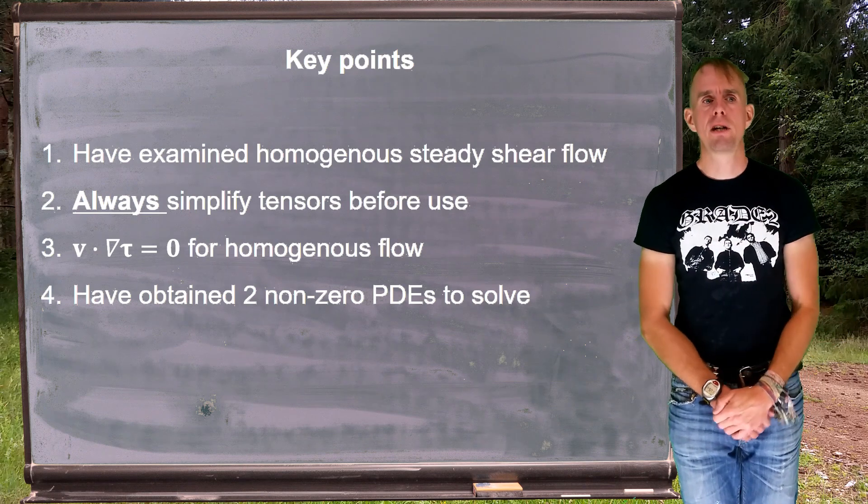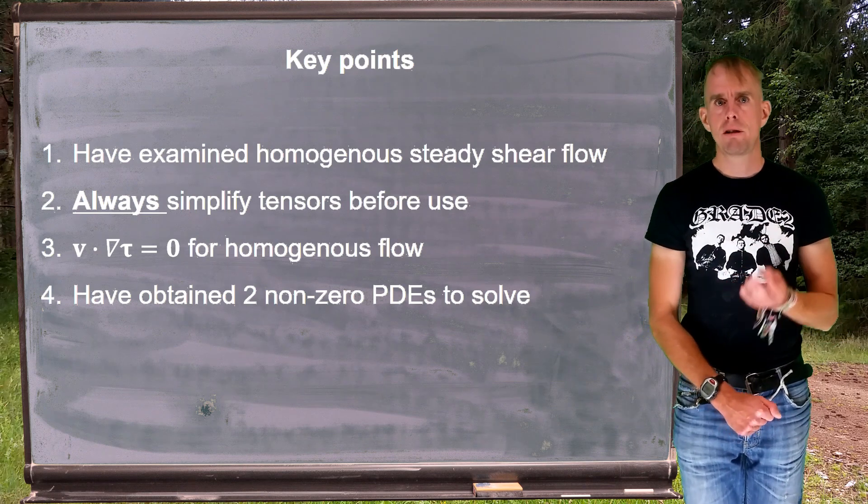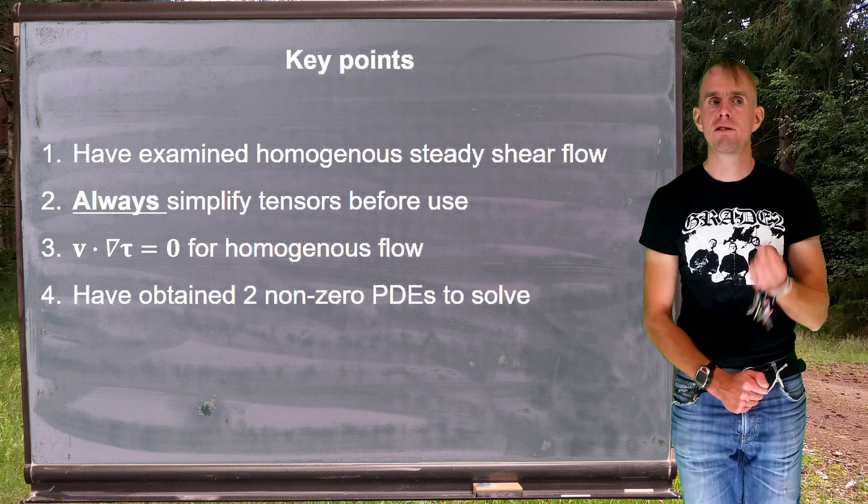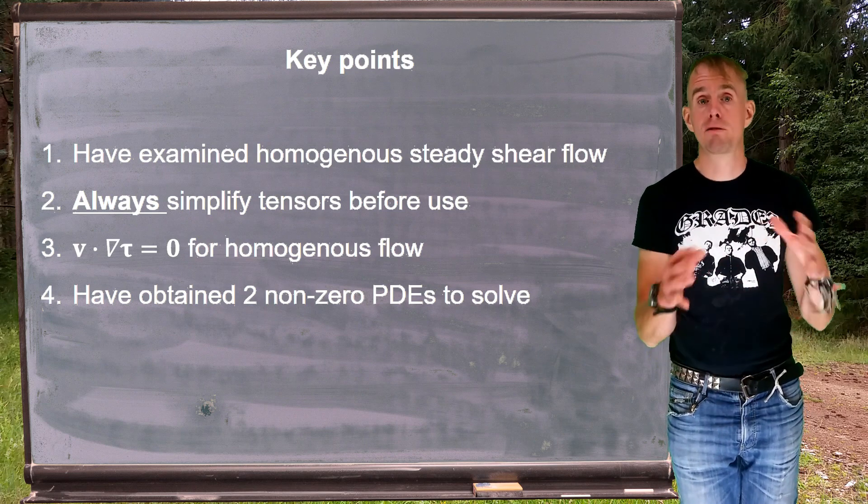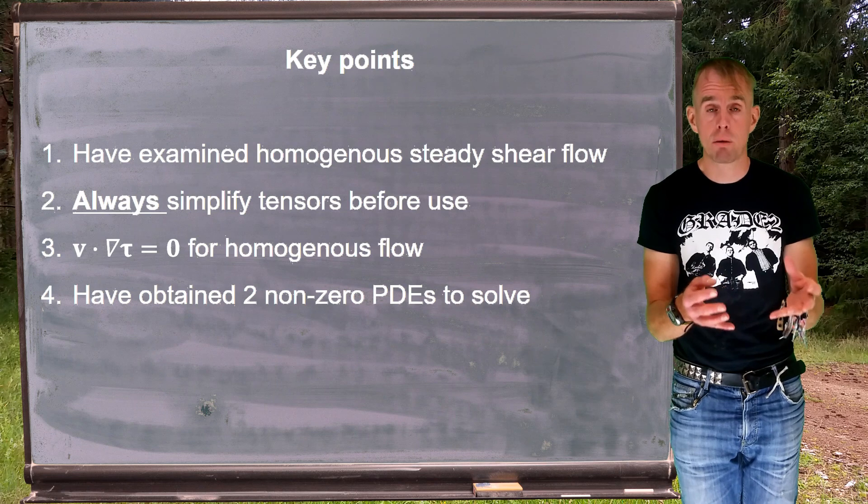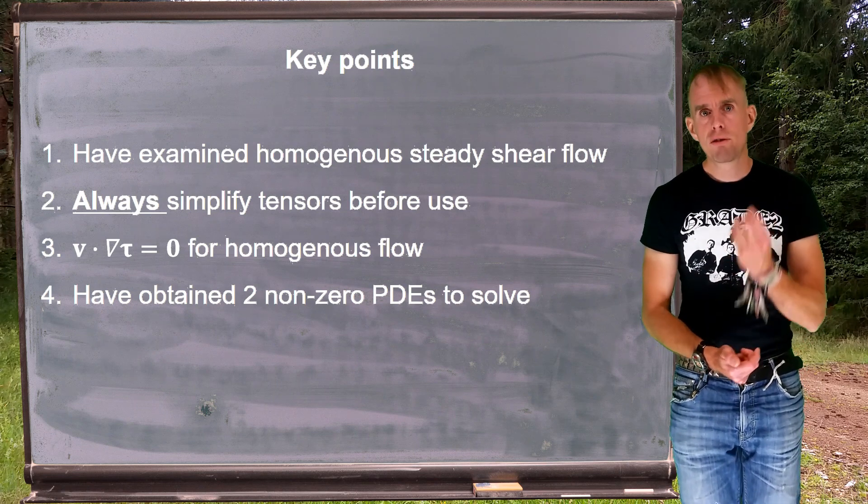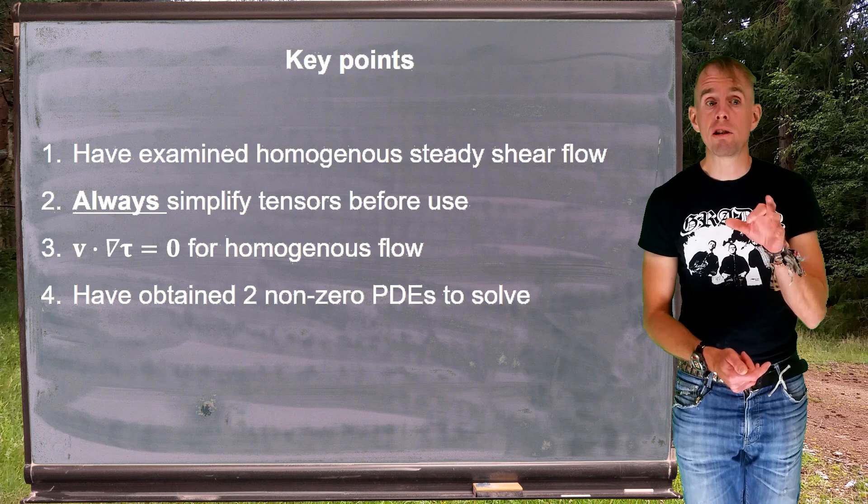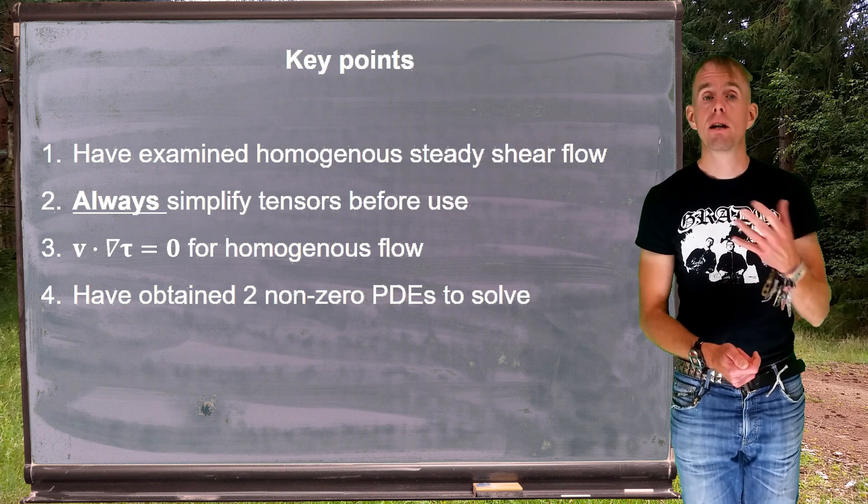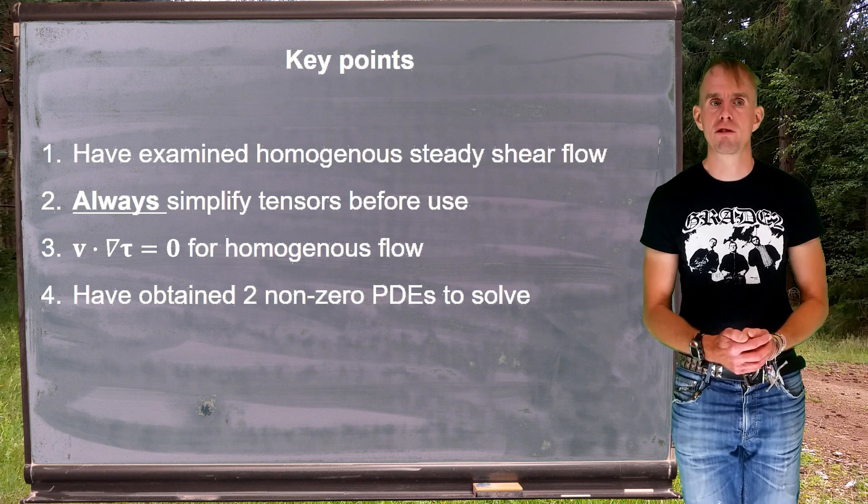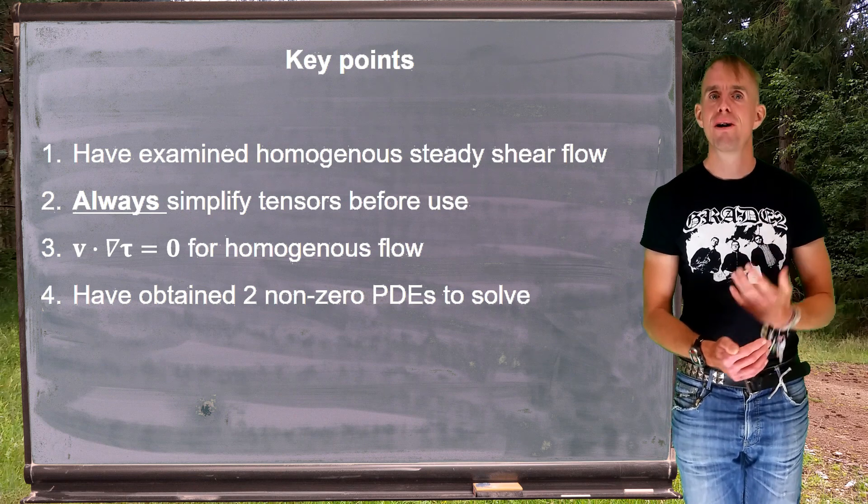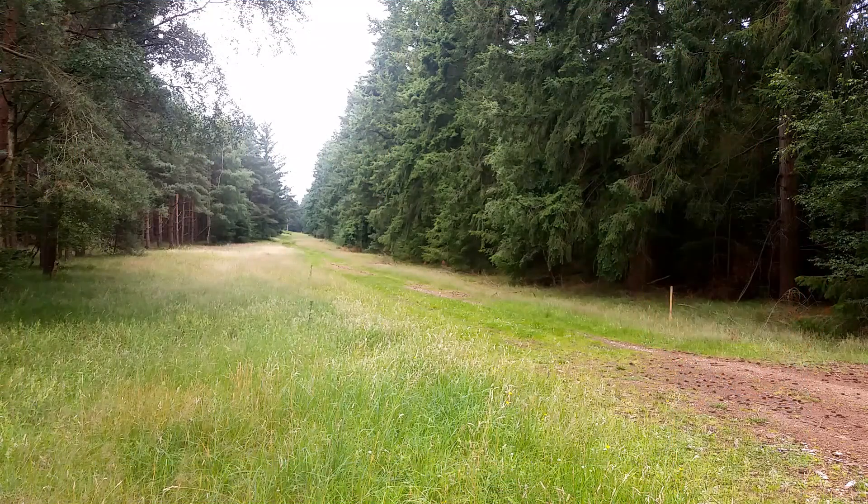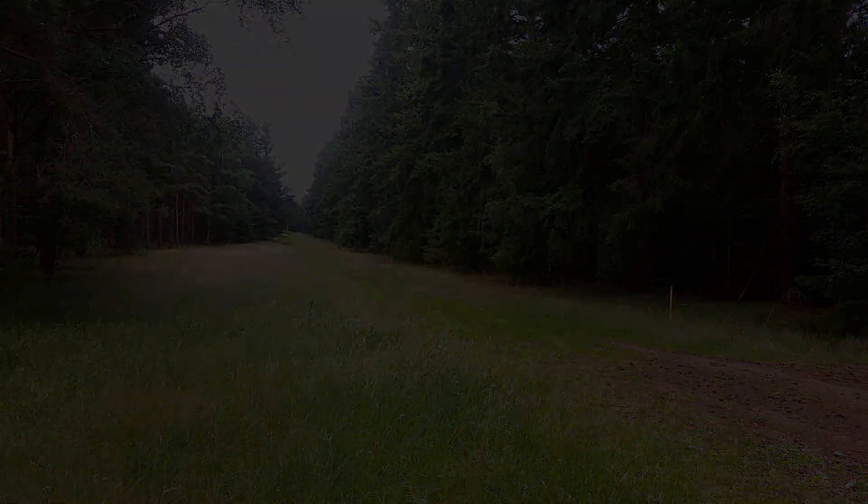So let's examine a few key points. We've looked at a flow scenario that involves homogenous steady shear flow. That homogenous flow definition allows us to say that v dot grad tau equals zero. We don't have to worry about formulating grad tau, which is a third-rank tensor. We've seen that it is very advantageous to simplify tensors before you operate on them. So I'll say always simplify those tensors before you use them. The result of examining this equation has now resulted in two non-zero PDEs to solve, which is what we'll do in the next part of this lecture. Thank you.